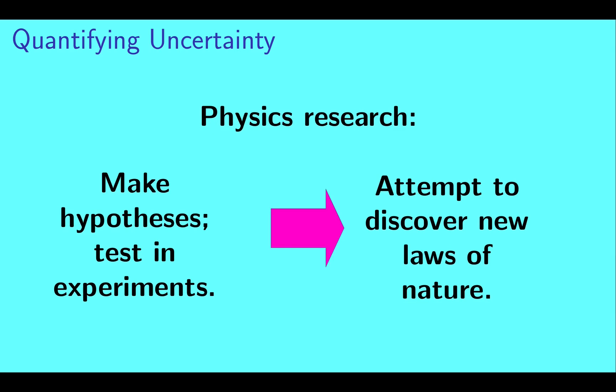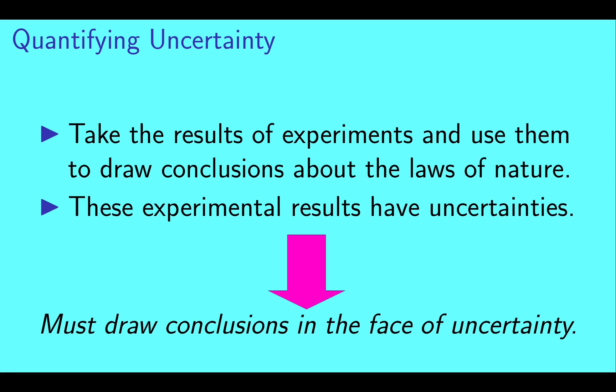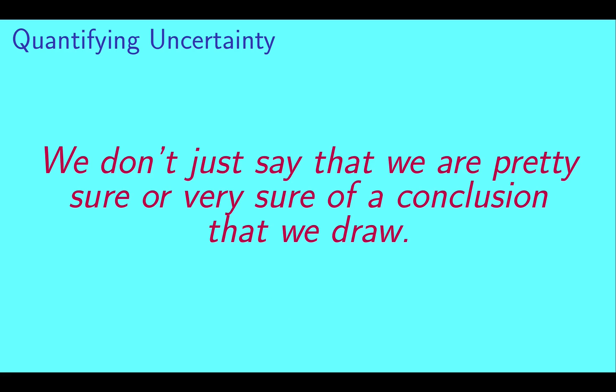But we can also do the reverse. In physics research, we make hypotheses and test them in experiments. From the results of these experiments, we attempt to discover new laws of nature. We want to take the results of experiments and use those results to draw conclusions about the laws of nature, but there's a significant complication: those experimental results have uncertainties. So this forces us to draw conclusions in the face of uncertainty. When we report a scientific result, we don't just say that we are pretty sure or very sure of a conclusion that we draw.